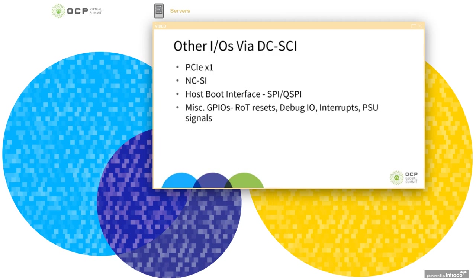Other IOs via DCSEI include a PCIe x1 interface, typically used for video or firmware update, and the network controller sideband interface — the spec provides detailed timing considerations for this. Also included are host boot interfaces like SPI or QSPI, as well as miscellaneous GPIOs like root of trust, reset controls, debug IOs, interrupts, and some power supply related signals.